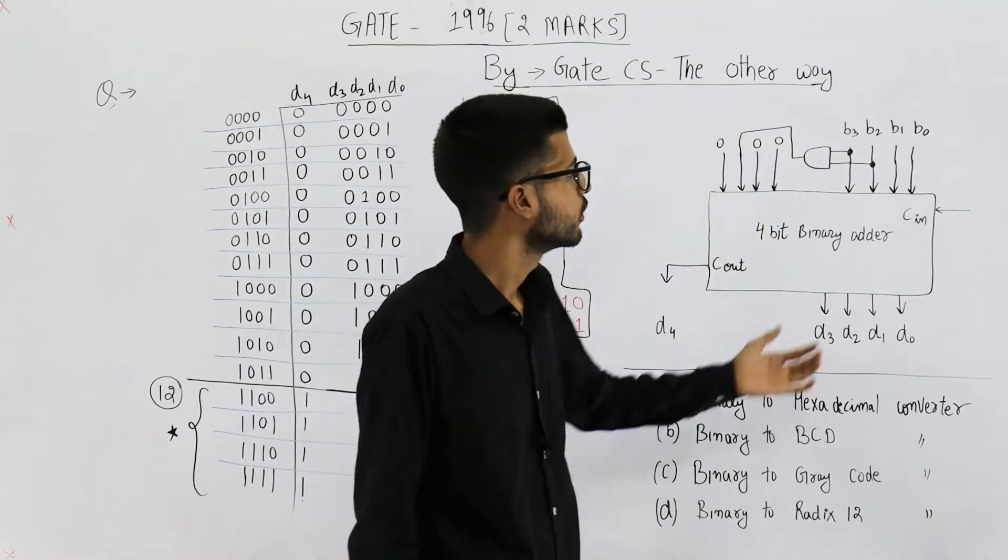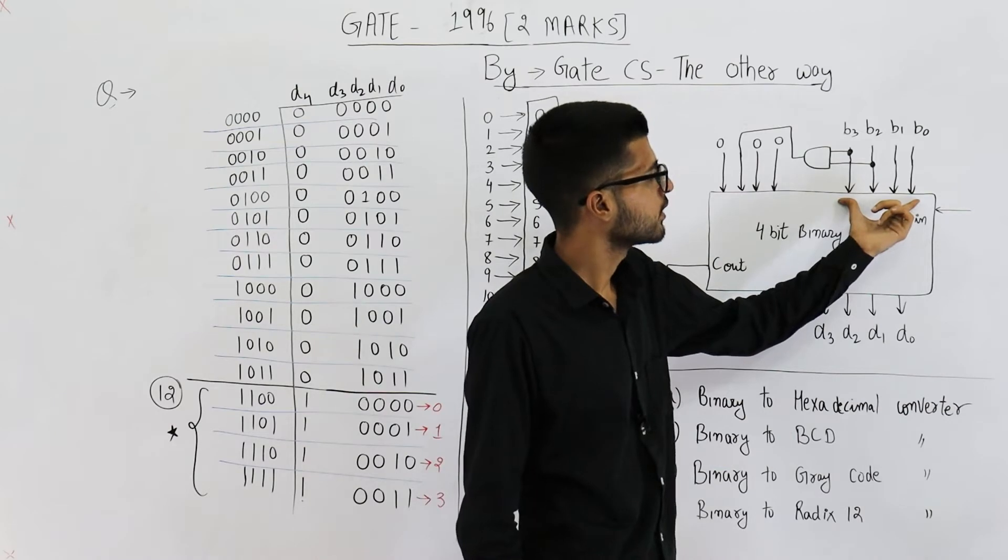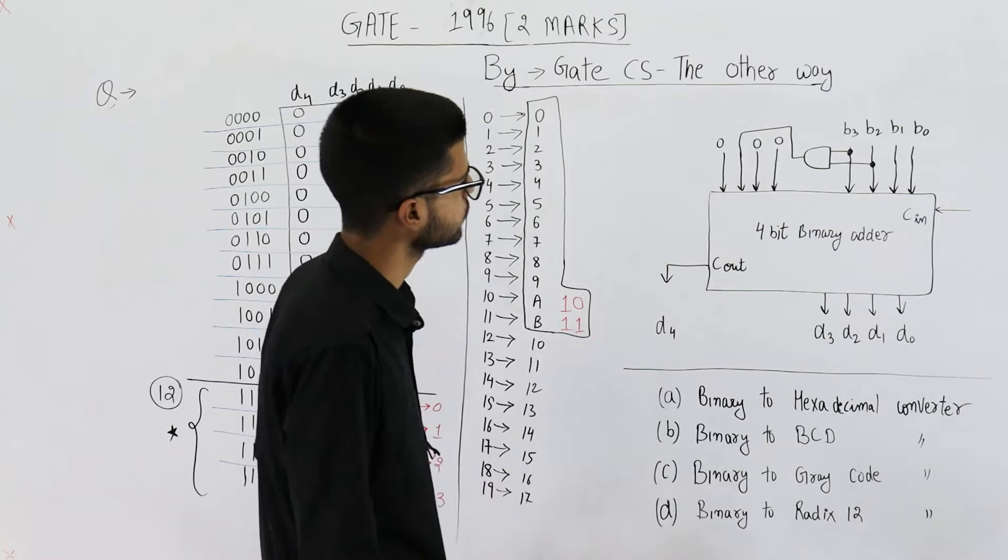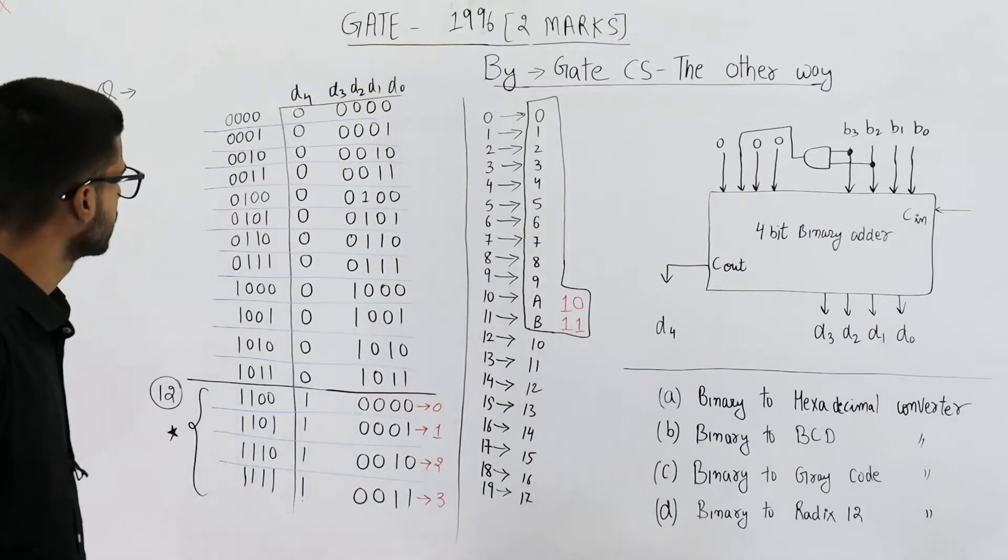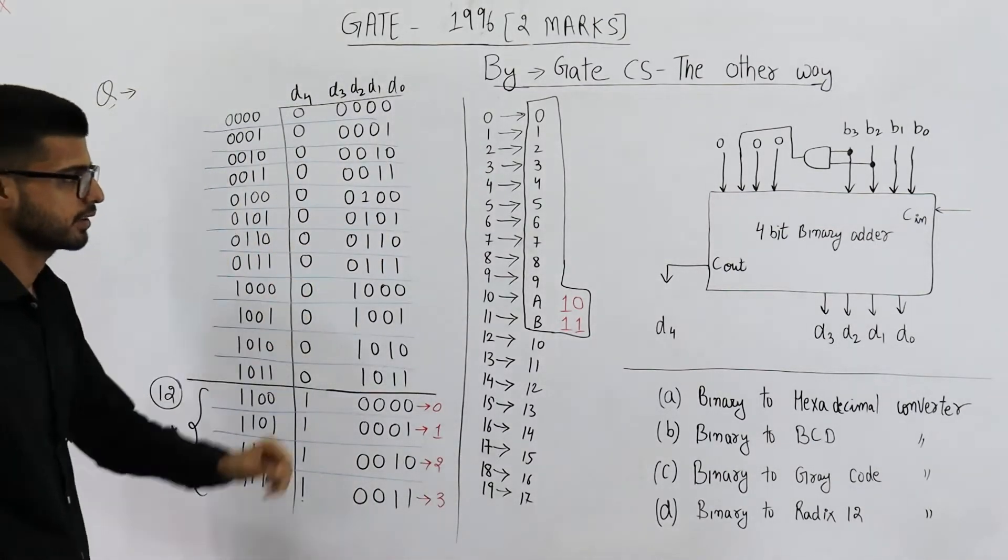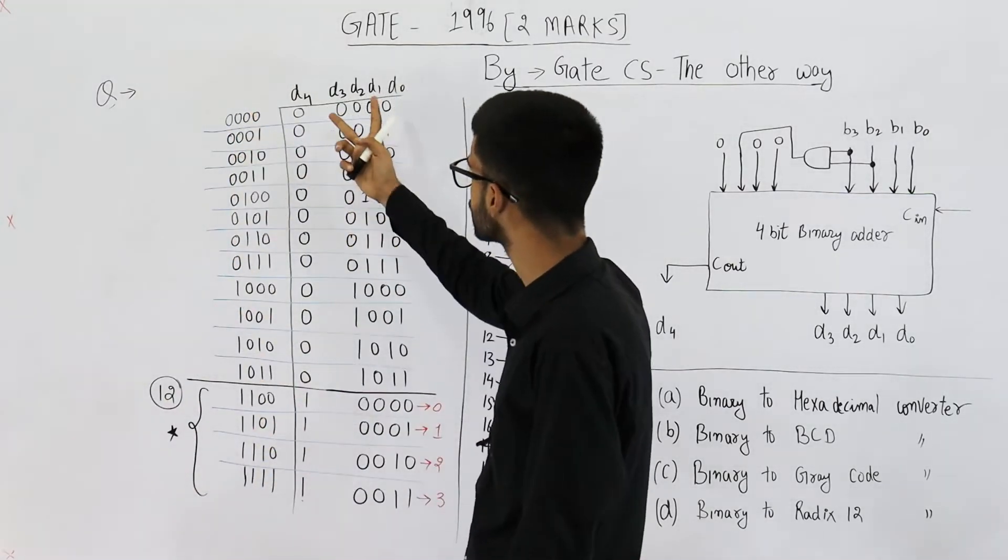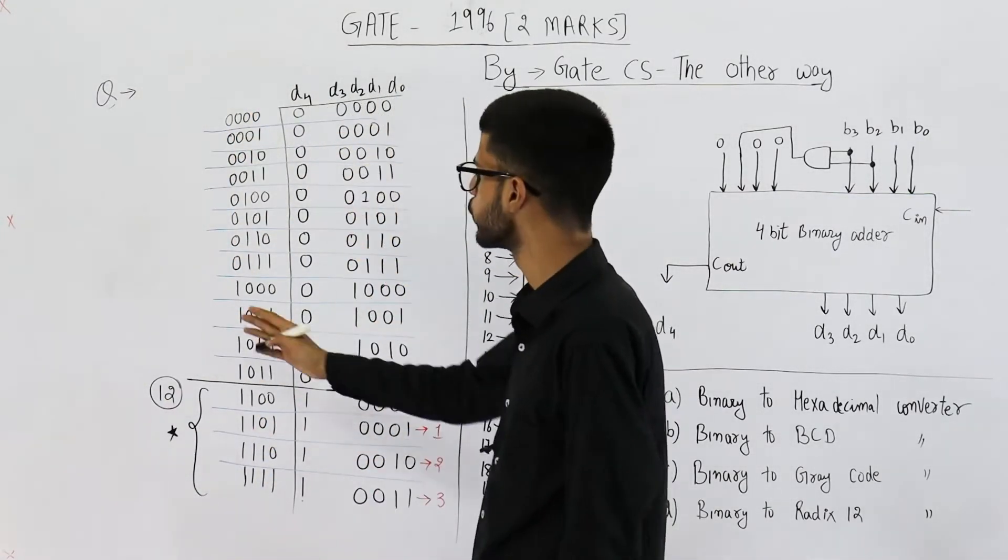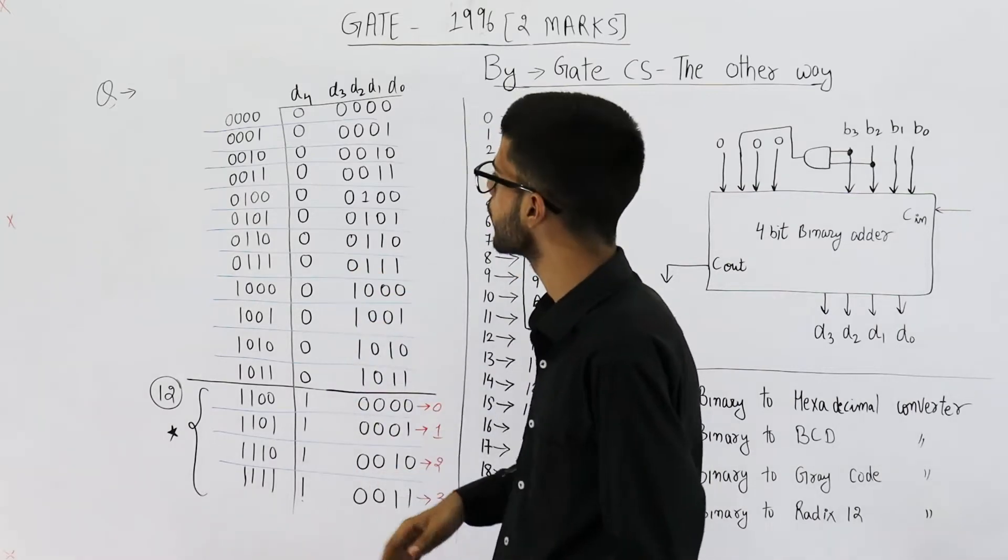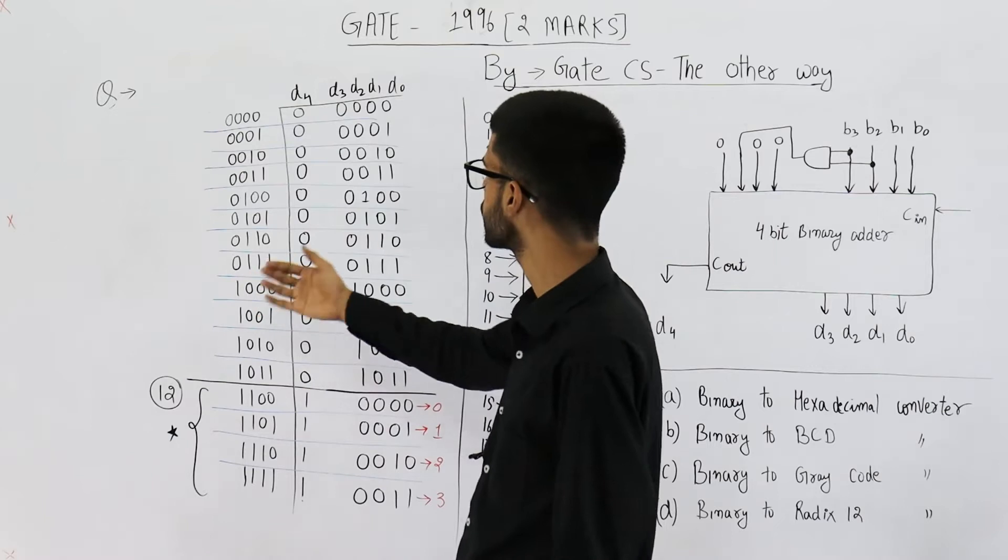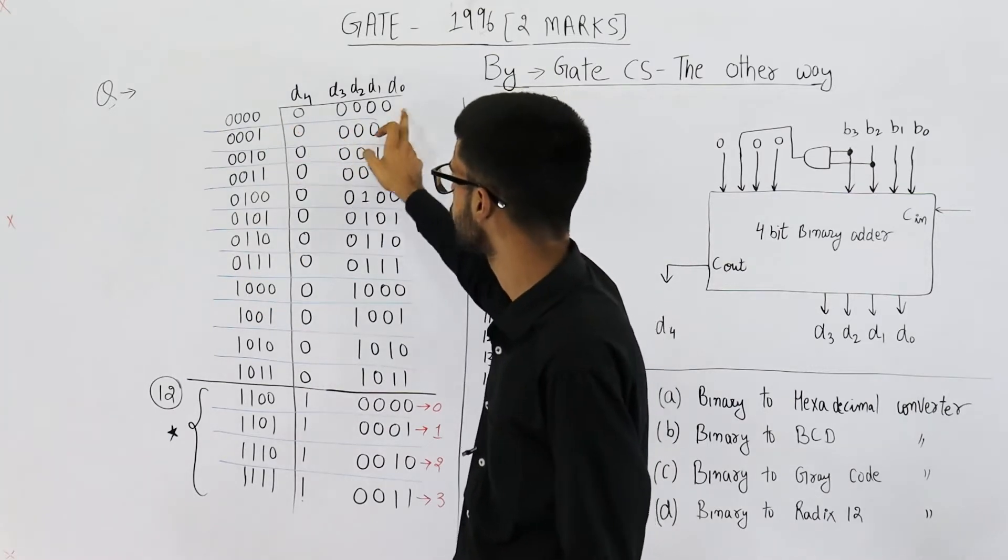In that case, we are actually not doing anything. This 4-bit number is outputted as it is. So you can see, I have drawn the truth table for that circuit. This is input and this 5-bit number is the output. 4-bit input, 5-bit output. You can see, from 0 to 11, the output is as it is. For 0, output is 0. For 4, output is 4. For 6, output is 6.